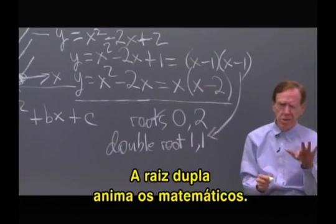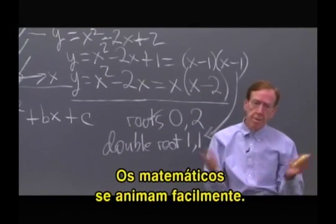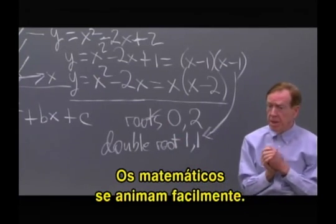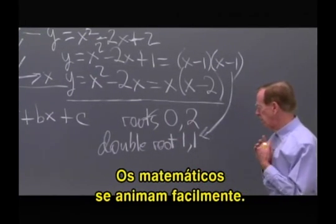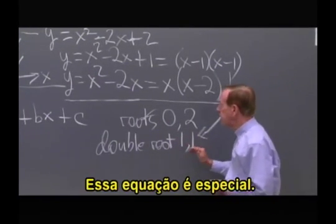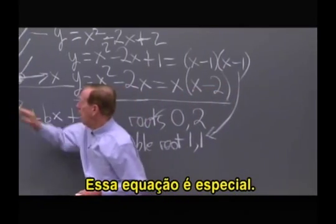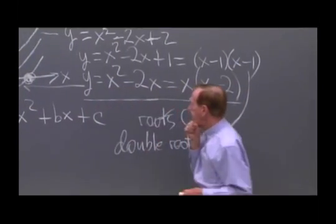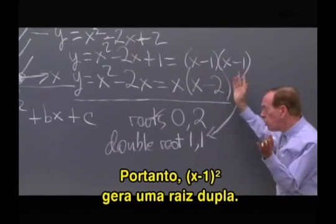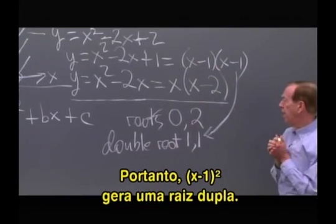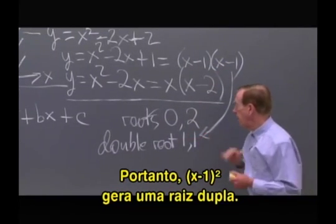Double roots get mathematicians excited — well, mathematicians are easily excited, you could say. That's special. So it's x minus 1 squared, and we see a double root.